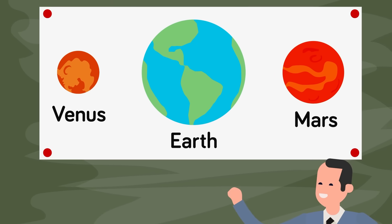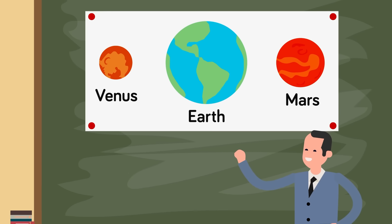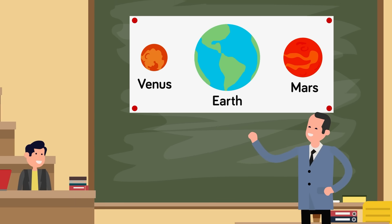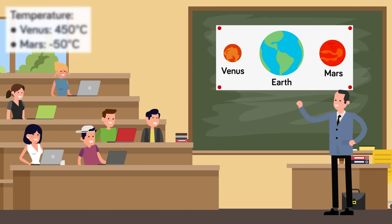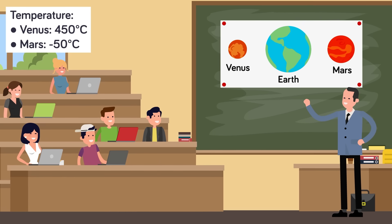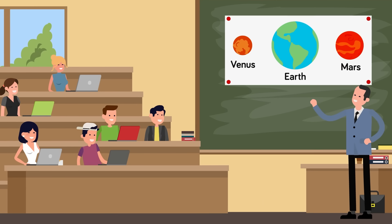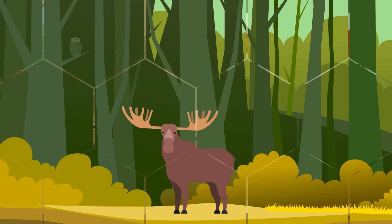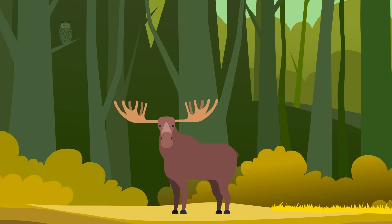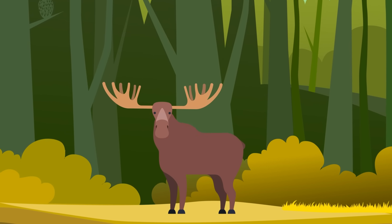If we compare Earth to Venus and Mars, it's easy to see the difference between our habitable planet and planets that are not considered habitable. Venus has an average surface temperature of around 450 degrees Celsius, and Mars has a surface temperature of around negative 50 degrees Celsius. Neither of these temperatures are suitable for the presence of life. Earth, on the other hand, has maintained a relatively stable and mild temperature for billions of years, making animal and plant life possible.